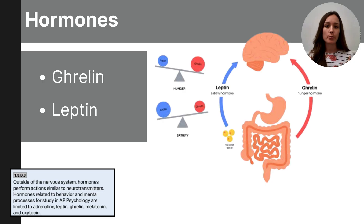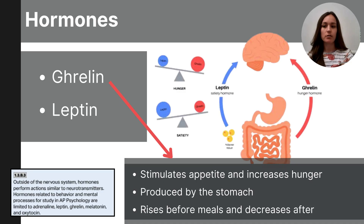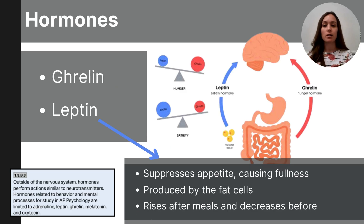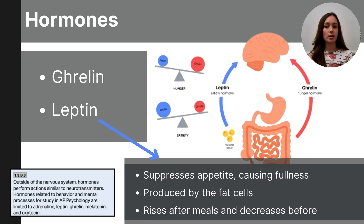Ghrelin and leptin are hormones related to hunger and appetite. Ghrelin is known as the hunger hormone because it stimulates appetite and promotes food intake. It's primarily produced in the stomach, released into the bloodstream, and ghrelin levels rise before meals — making us hungry — and decrease after eating. Leptin is an appetite suppressant. When we have enough energy stored in fat cells, high levels of leptin signal to the body that we have enough energy and cause us to increase energy expenditure.